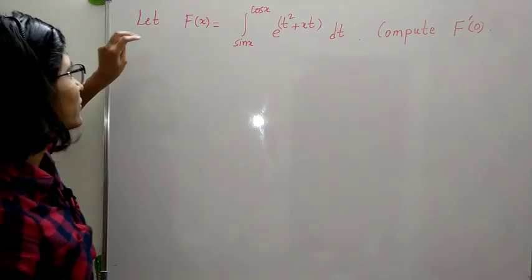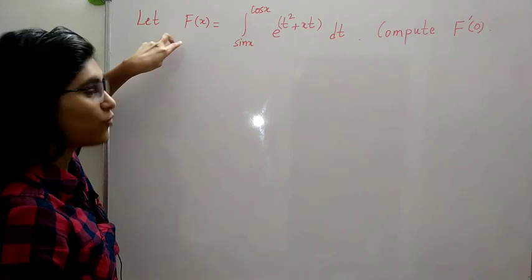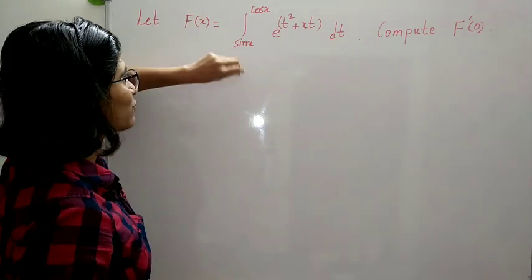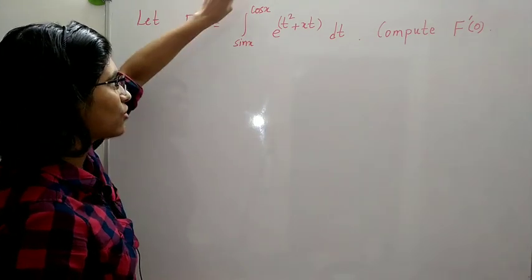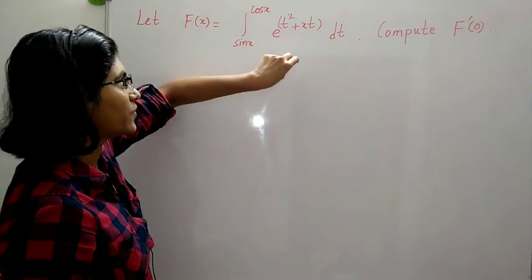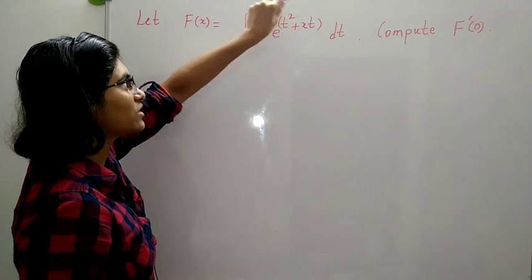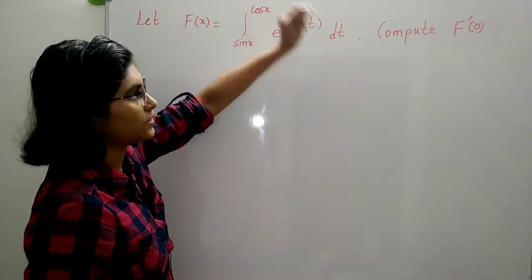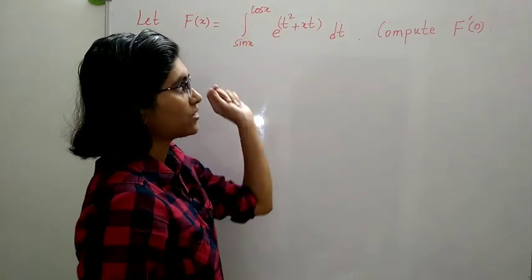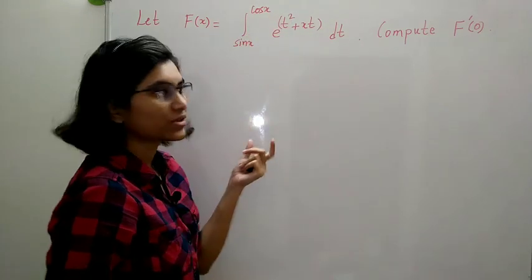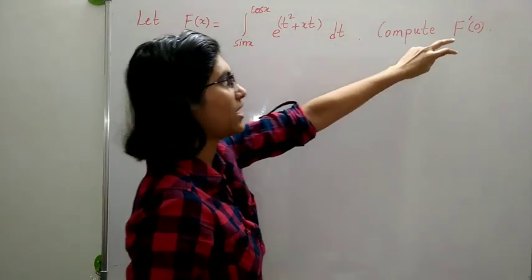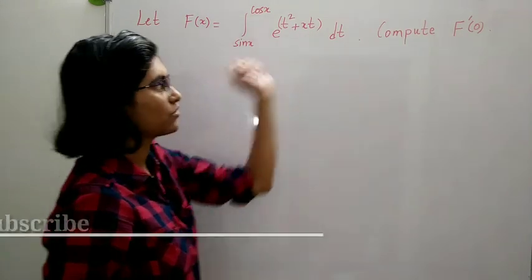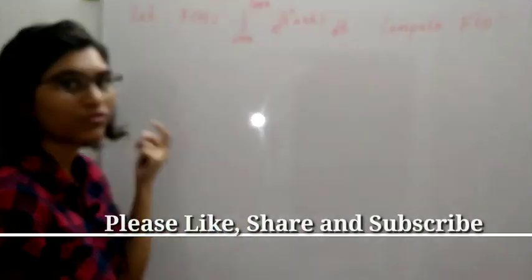We have given a function f(x) equal to the integral from sin(x) to cos(x) of e raised to (t² + xt) dt, and we have to compute f'(0).